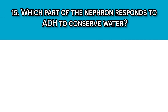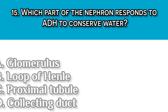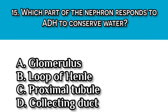Question number fifteen: Which part of the nephron responds to ADH to conserve water? Our answer should be D, the collecting ducts, because ADH acts on the collecting ducts to improve water permeability and reabsorption.